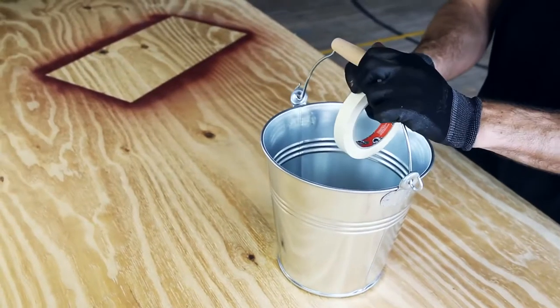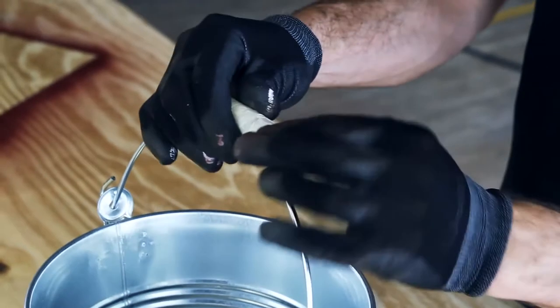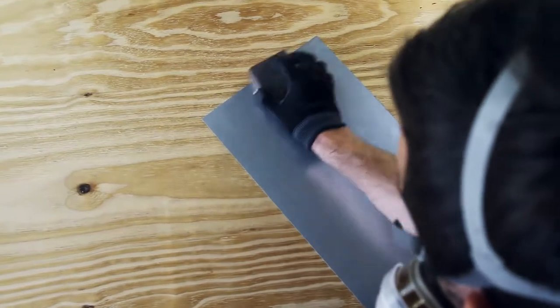Remove and fill rusty spots if necessary. Irregularities such as cracks or holes should be filled. Slightly sand smooth metals in order to improve adhesion.